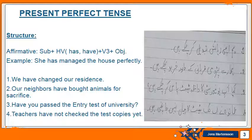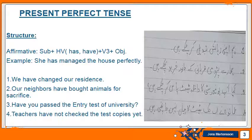Number three is an interrogative: 'Have you passed the entry test of the university?' To make it interrogative, the helping verb comes first, then the rest of the construction follows, and a question mark is added. Number four is negative: 'Teachers have not checked the copies yet.' To make it negative, 'not' is added. This is how you make sentences in present perfect tense.